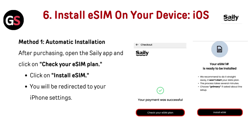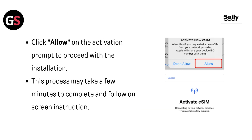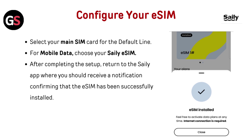Install eSIM on your device — iOS, Method 1: Automatic Installation. After purchasing, open the Selly app and click on Check Your eSIM Plan, then click Install eSIM. You will be redirected to your iPhone settings. Click Allow on the activation prompt to proceed. This process may take a few minutes — follow the on-screen instructions. Then configure your eSIM: select your main SIM card for the default line, and for mobile data, choose your Selly eSIM. After completing setup, return to the Selly app where you should receive a notification confirming the eSIM has been successfully installed.